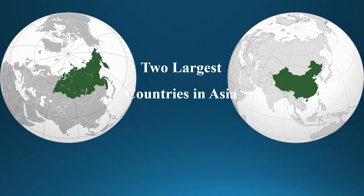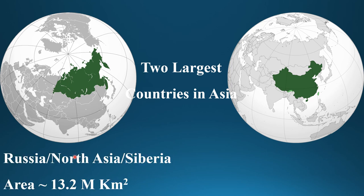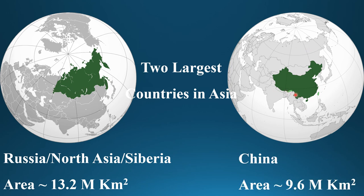The two largest countries in Asia are Russia and China. The Asian part of Russia, sometimes called North Asia or Siberia, has an area of 13.2 million square kilometers. The second largest country in Asia is China, with an area of 9.6 million square kilometers.